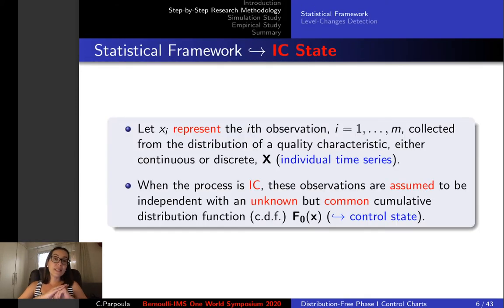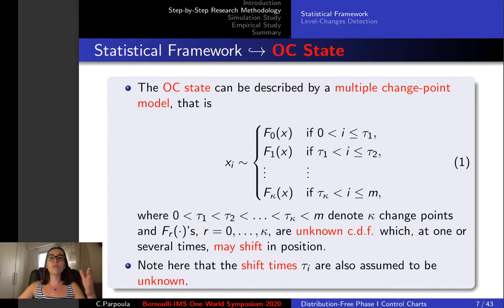This is the statistical framework. Let x1, x2, xm represent the observations that assume to be independent with an unknown but common cumulative distribution function f0x. This corresponds to the in-control state, whereas the out-of-control state could be described by a multiple change point model as presented in relation one.